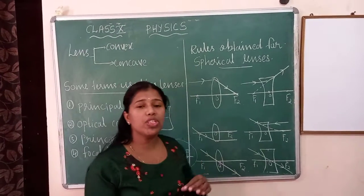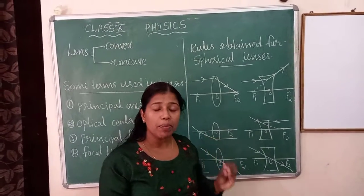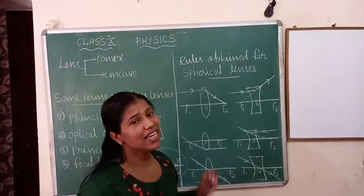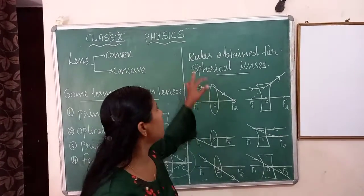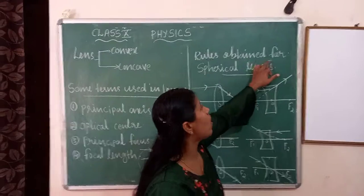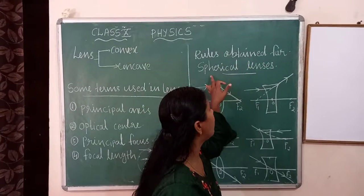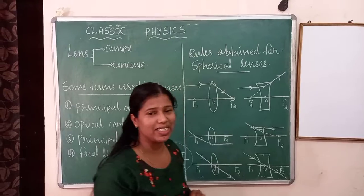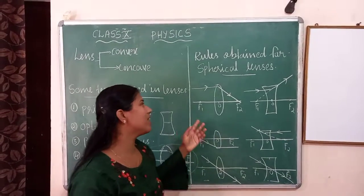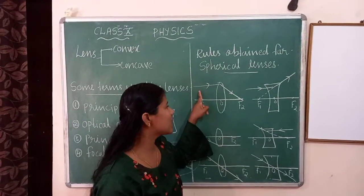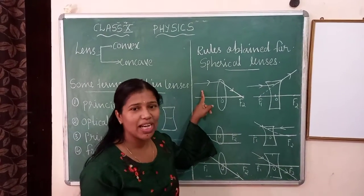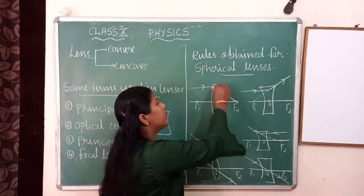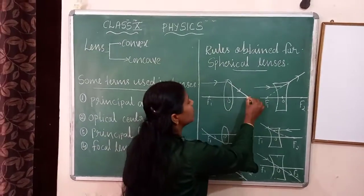Our main aim in this chapter is the very important topic of image formed by convex lens. But first we have to discuss the rules obtained for spherical lenses. There are three rules. First rule: a ray of light parallel to the principal axis, after refraction, passes through the focus.